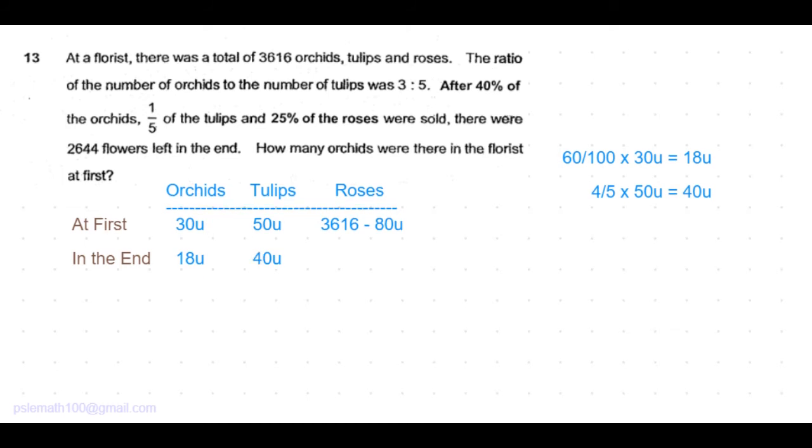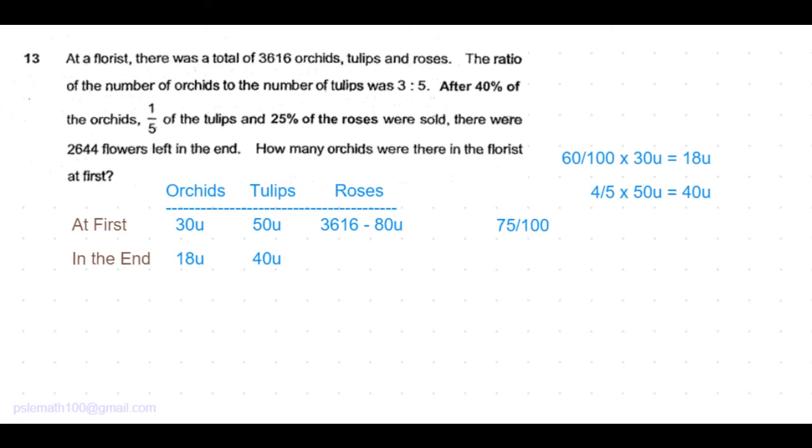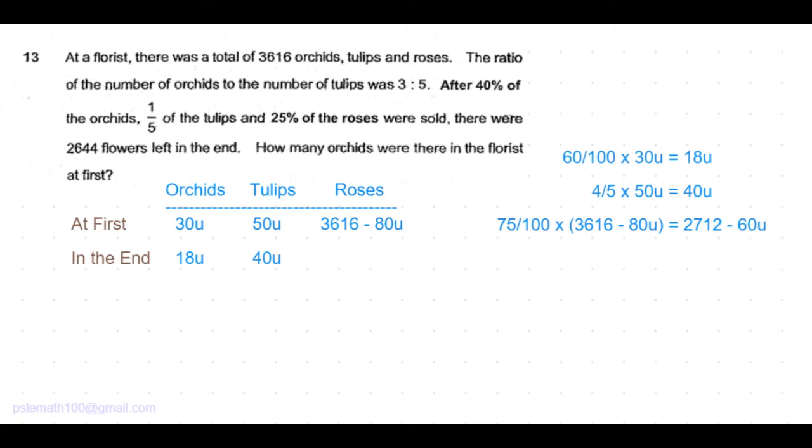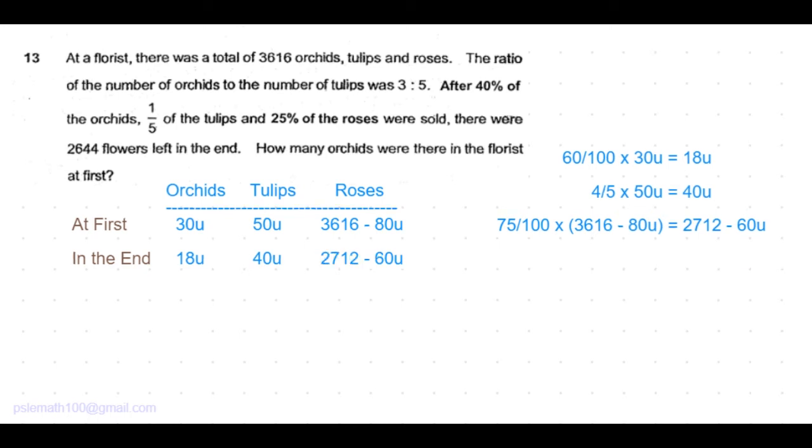And 25% of the roses were sold, which means 75% were left. 75 over 100 of 3616 minus 80 units equals 75% of 3616 is 2712 minus 75% of 80 units is 60 units. So the number of roses left is 2712 minus 60 units.